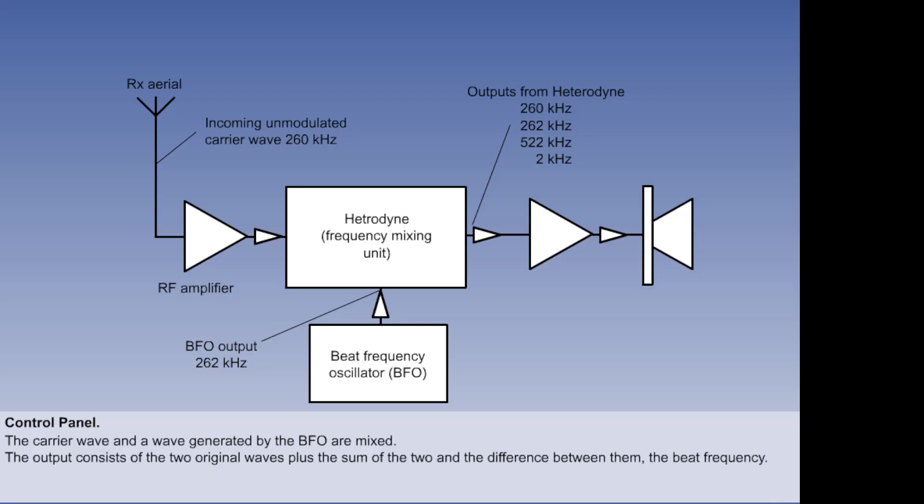The output comprises four signals: the two original signals, the sum of the two, which is 522 kHz, and the difference between the two, the beat frequency, which is 2 kHz. It is this 2 kHz signal frequency that is required, because it is in the audible range, and so the Morse ident can be heard.